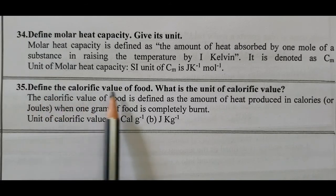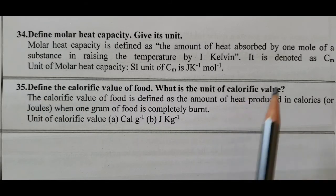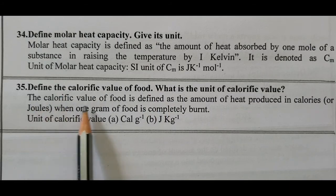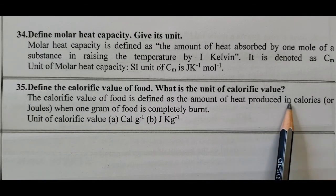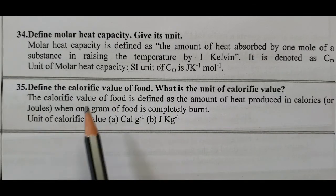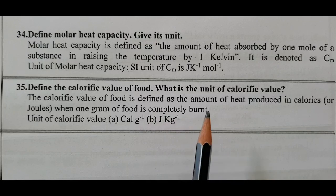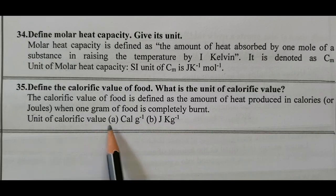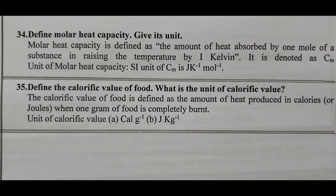Question number 35: Define the calorific value of a food and give its unit. The calorific value of a food is defined as the amount of heat produced in calories or joules when one gram of food is completely burned. The unit of calorific value is calories per gram (cal·g⁻¹) or joules per gram (J·g⁻¹).